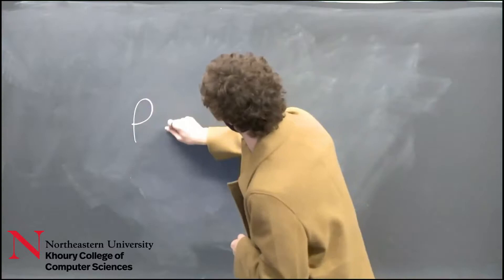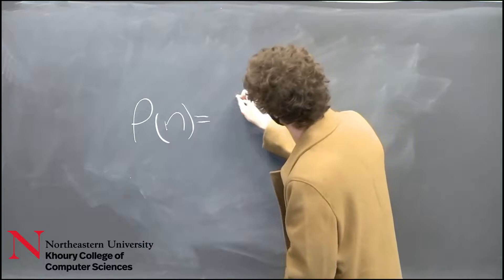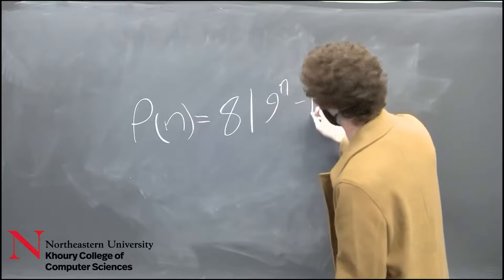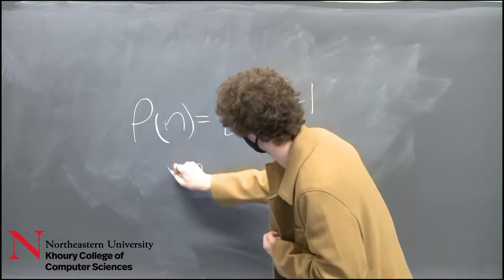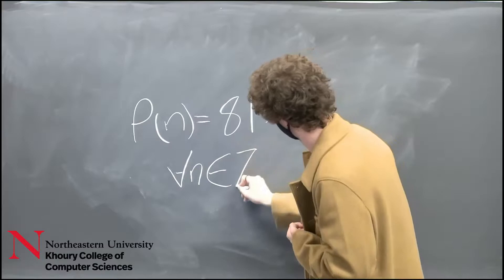We claim p to be true such that 8 divides 9 to the n minus 1 for all n, where n exists as a member of the set of all positive integers.